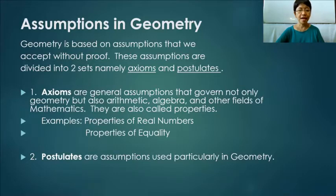Number one, axioms. Axioms are general assumptions that govern not only geometry, but also arithmetic, algebra, and other fields of mathematics. They are also called properties. Examples: Properties of real numbers. Properties of equality.